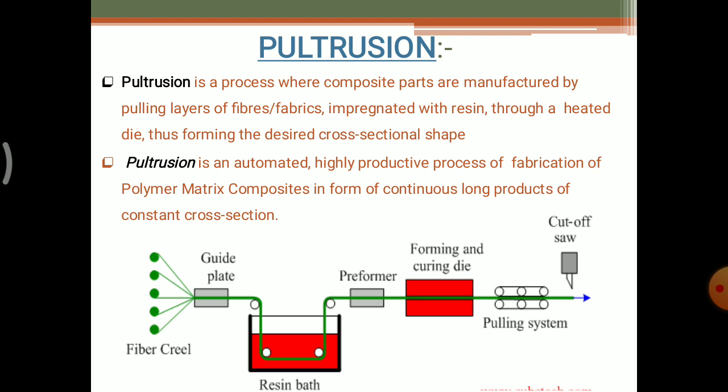In this process, we are pulling the fibers, using reinforcements as fibers or fabrics. These are dipped in the resin — called the resin bath — and then sent to a heating die, forming a cross sectional shape. Pultrusion is an automated, highly productive process which obtains the fabrication of polymer matrix composites in the form of continuous long products of constant cross section.